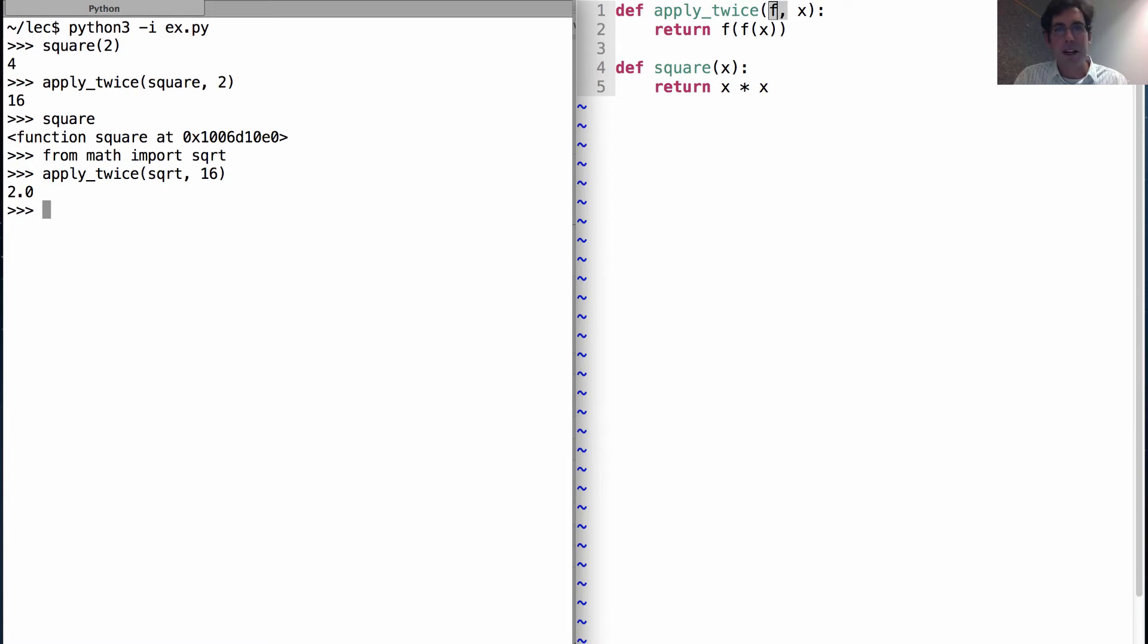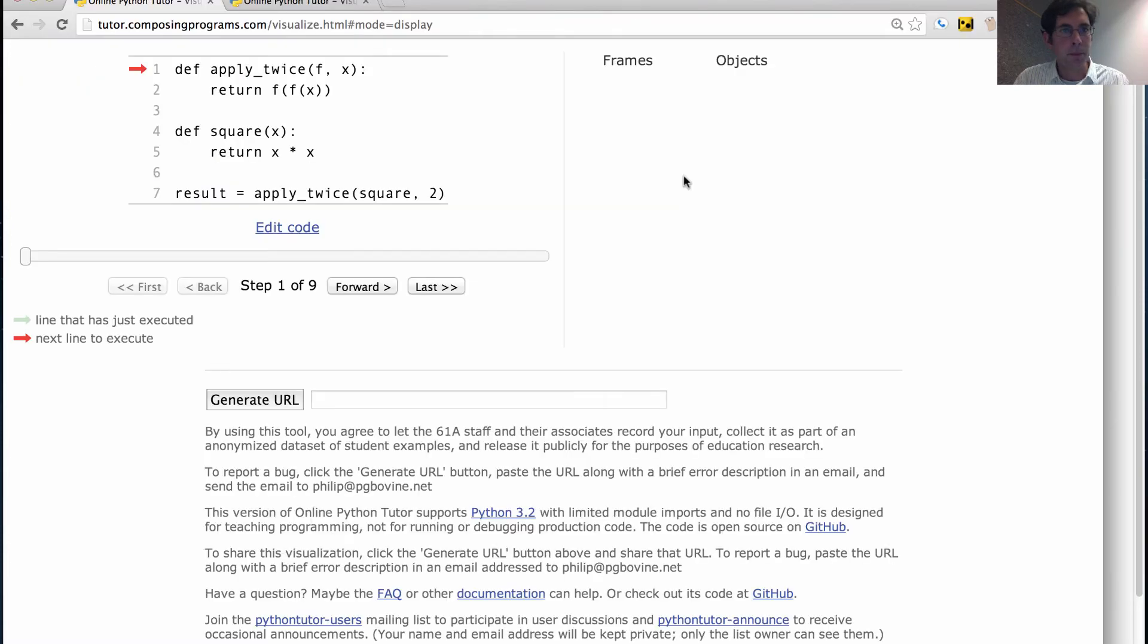Let's look at the environment diagram. Apply_twice f of x, return f of f of x. There's the square function. And then we'll store the result of applying twice square to 2 in a name called result. So first we execute the def statement. Nothing has been applied yet. All we've done is create a function. We'll also create the square function. So now the names apply_twice and square are available. And we use them both here.